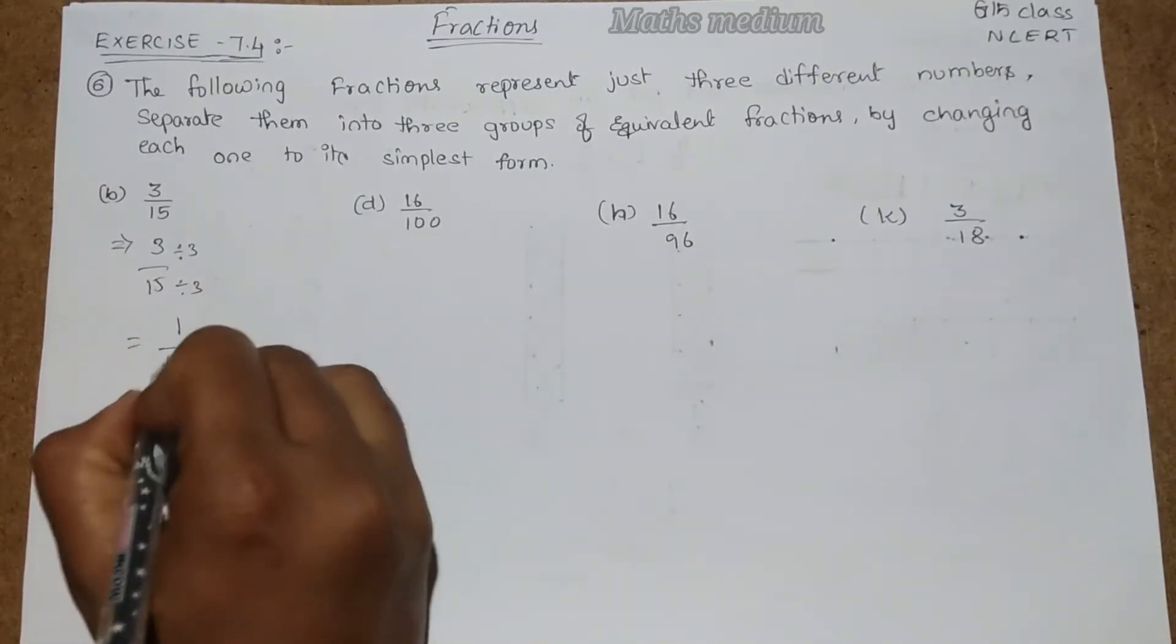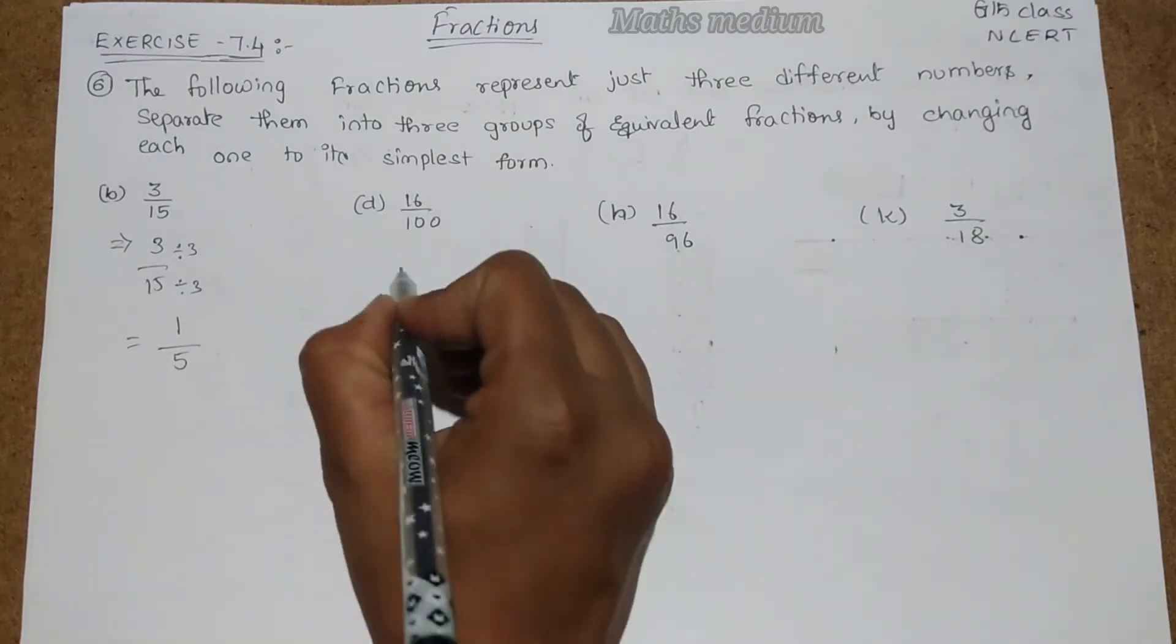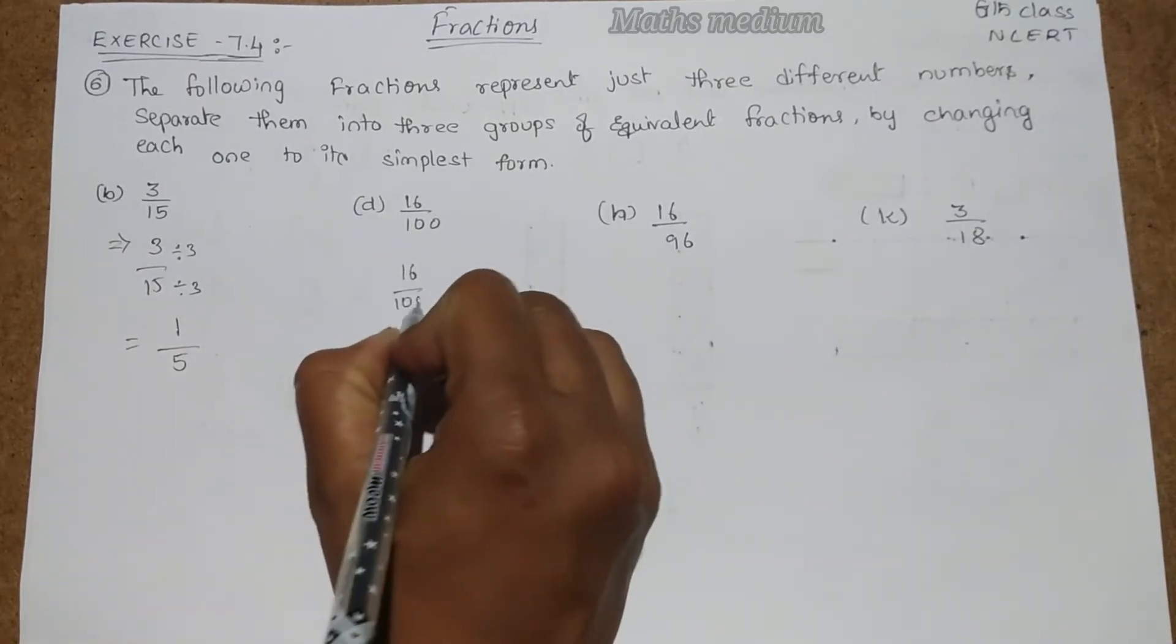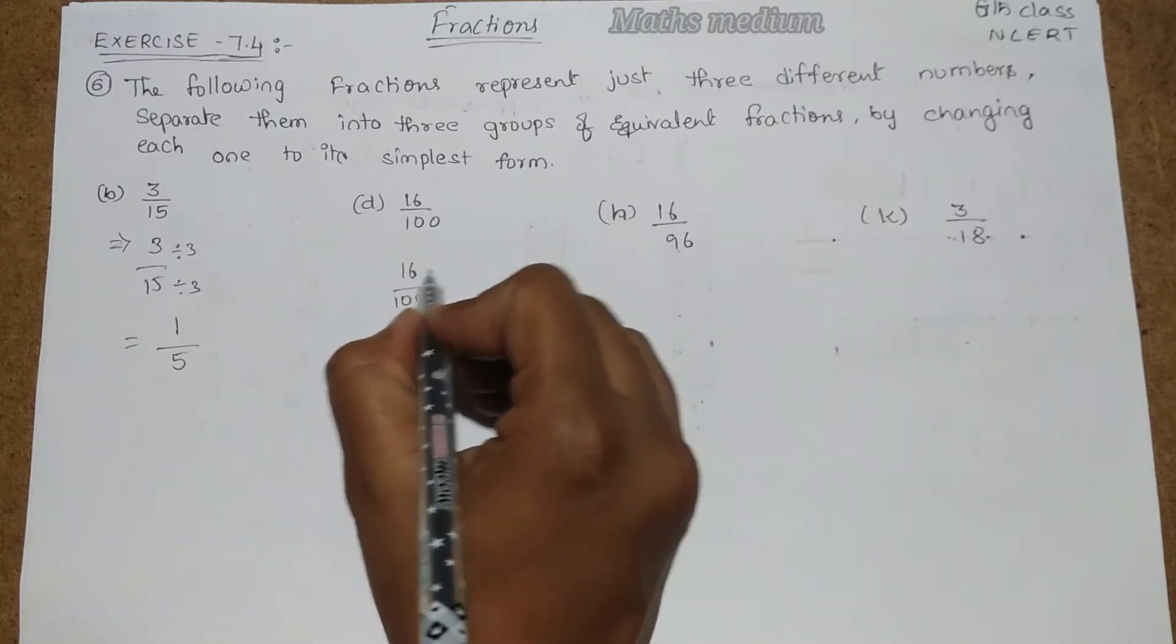Next, coming to this 16 by 100. If you observe this, this is divided by 4, this is also divided by 4. Then we will get 4 by 25.